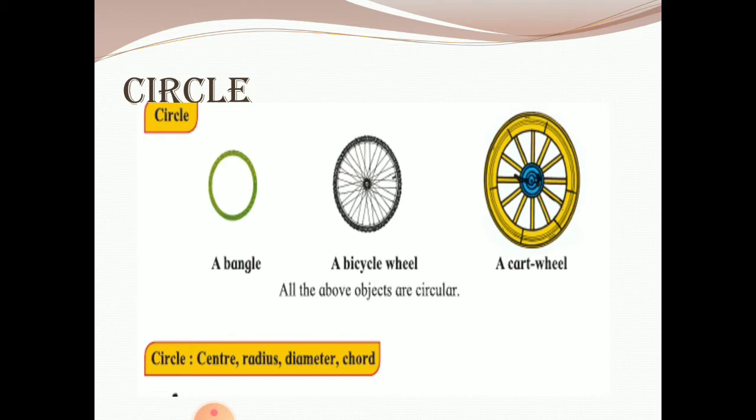Now here in the picture you can see a bangle, a bicycle wheel. All the above objects are circular, a cart wheel.